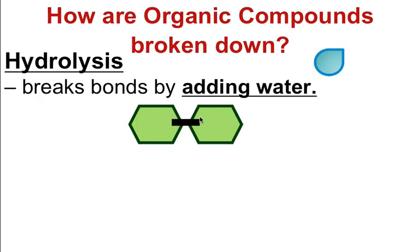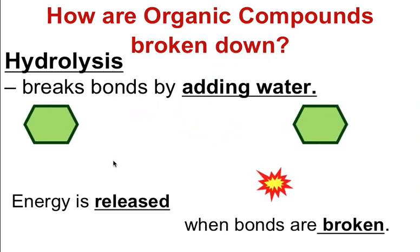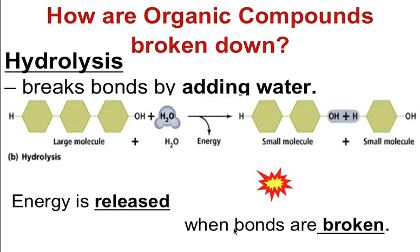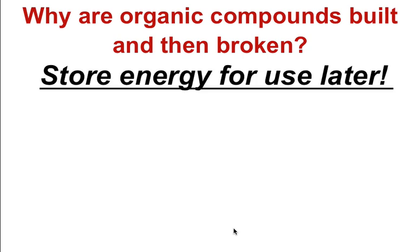On the opposite side is hydrolysis. If you want to break that bond, you do the opposite process — add water to break the bond. Before you had to put energy in, so this time you get energy out. Energy is released when the bonds are broken. So why do we build up and then break organic compounds? The reason is to store energy and then use that energy later when we need it.